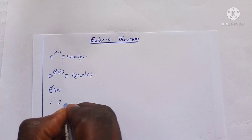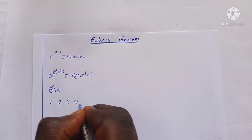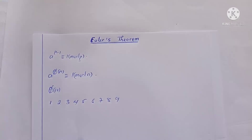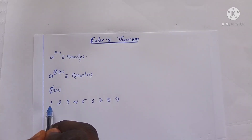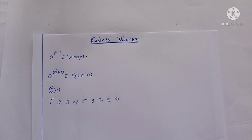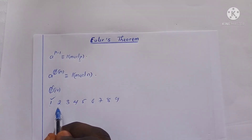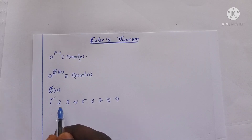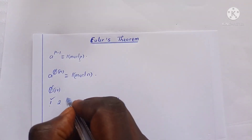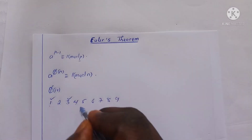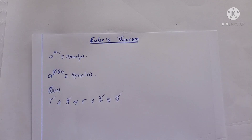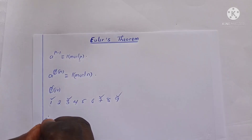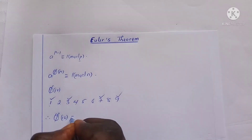The integers between 1 and 9 are 1, 2, 3, 4, 5, 6, 7, 8, and 9. The GCD of 1 and 10 is 1, so they are co-prime. The GCD of 2 and 10 is 2, so 2 and 10 are not co-prime — we will not count 2. The GCD of 3 and 10 is 1, the GCD of 7 and 10 is 1, and the GCD of 9 and 10 is 1. So there are 4 integers co-prime to 10. Therefore, phi of 10 equals 4.